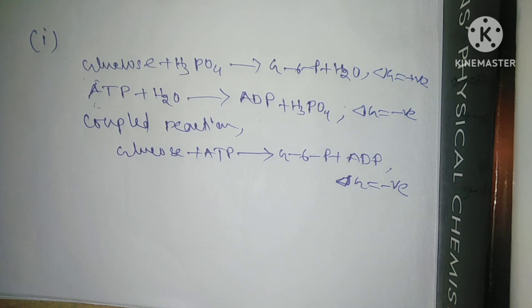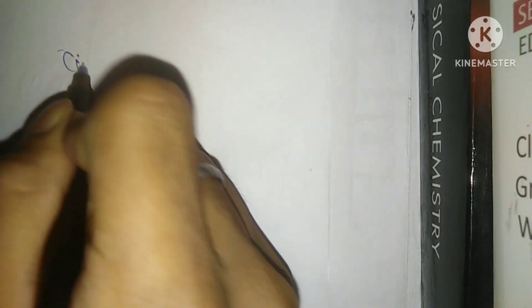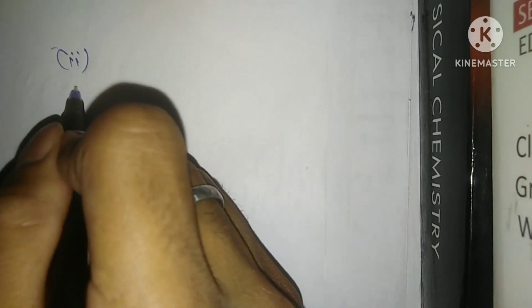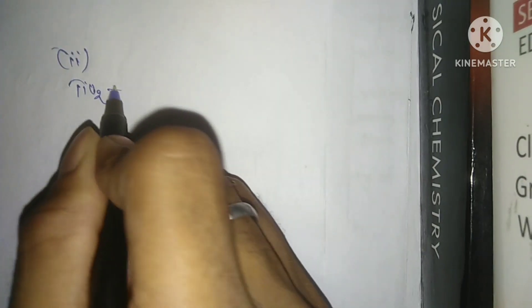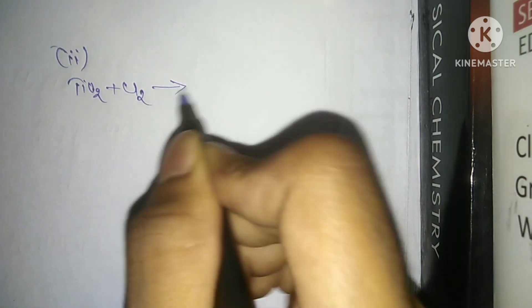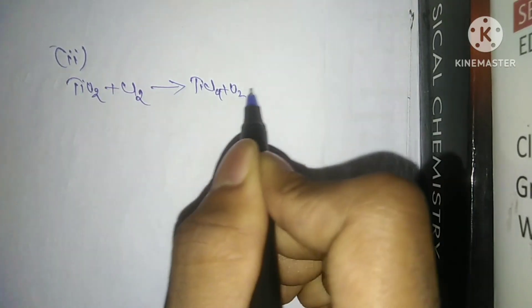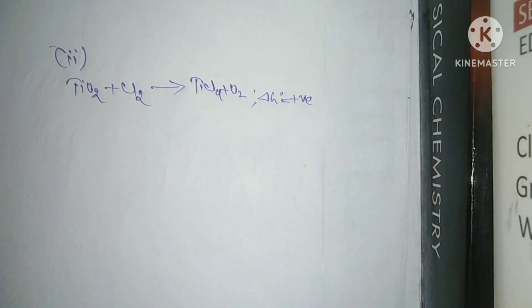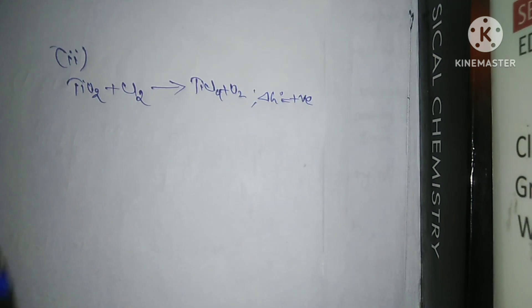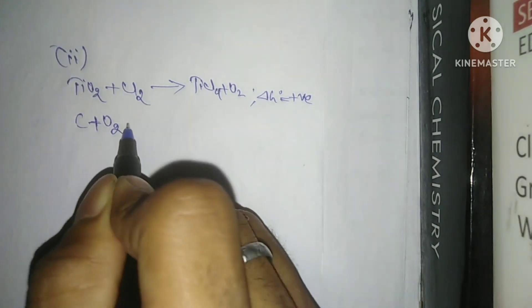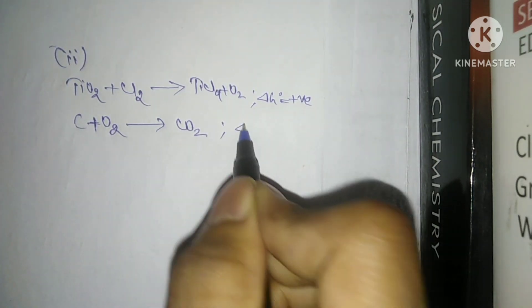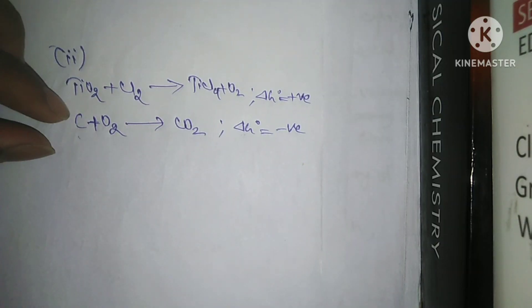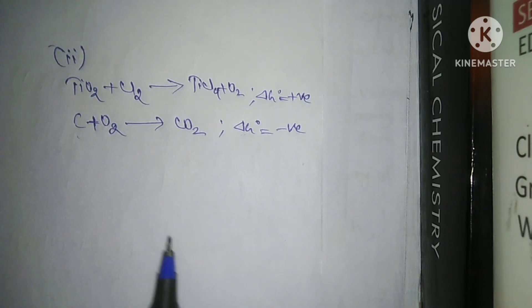Example two: the chlorination of titanium oxide in the presence of carbon. The reaction TiO2 + Cl2 → TiCl4 + O2 is endergonic — its Gibbs free energy change is positive. A second reaction, C + O2 → CO2, has a negative Gibbs free energy change, making it highly exergonic.